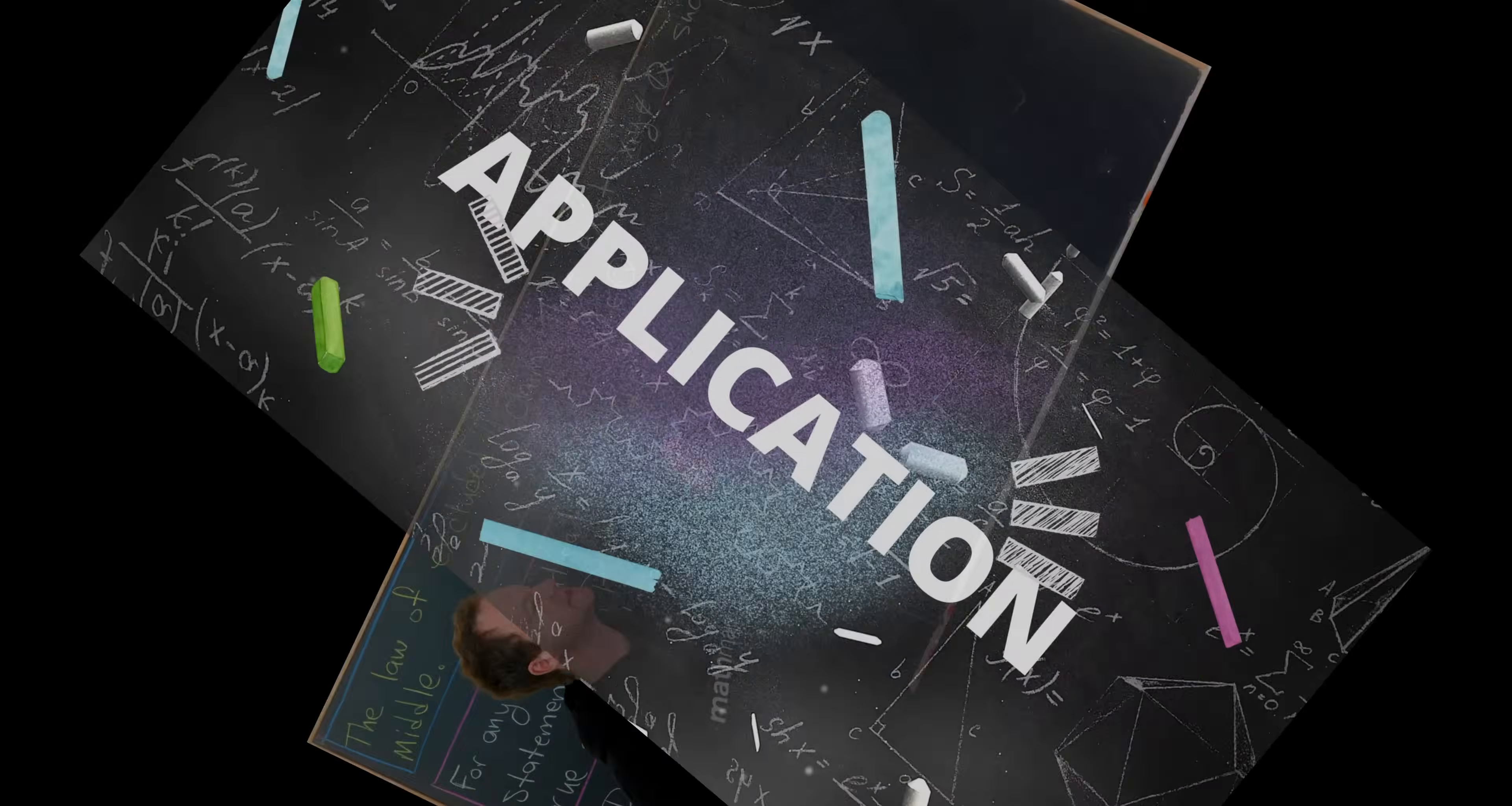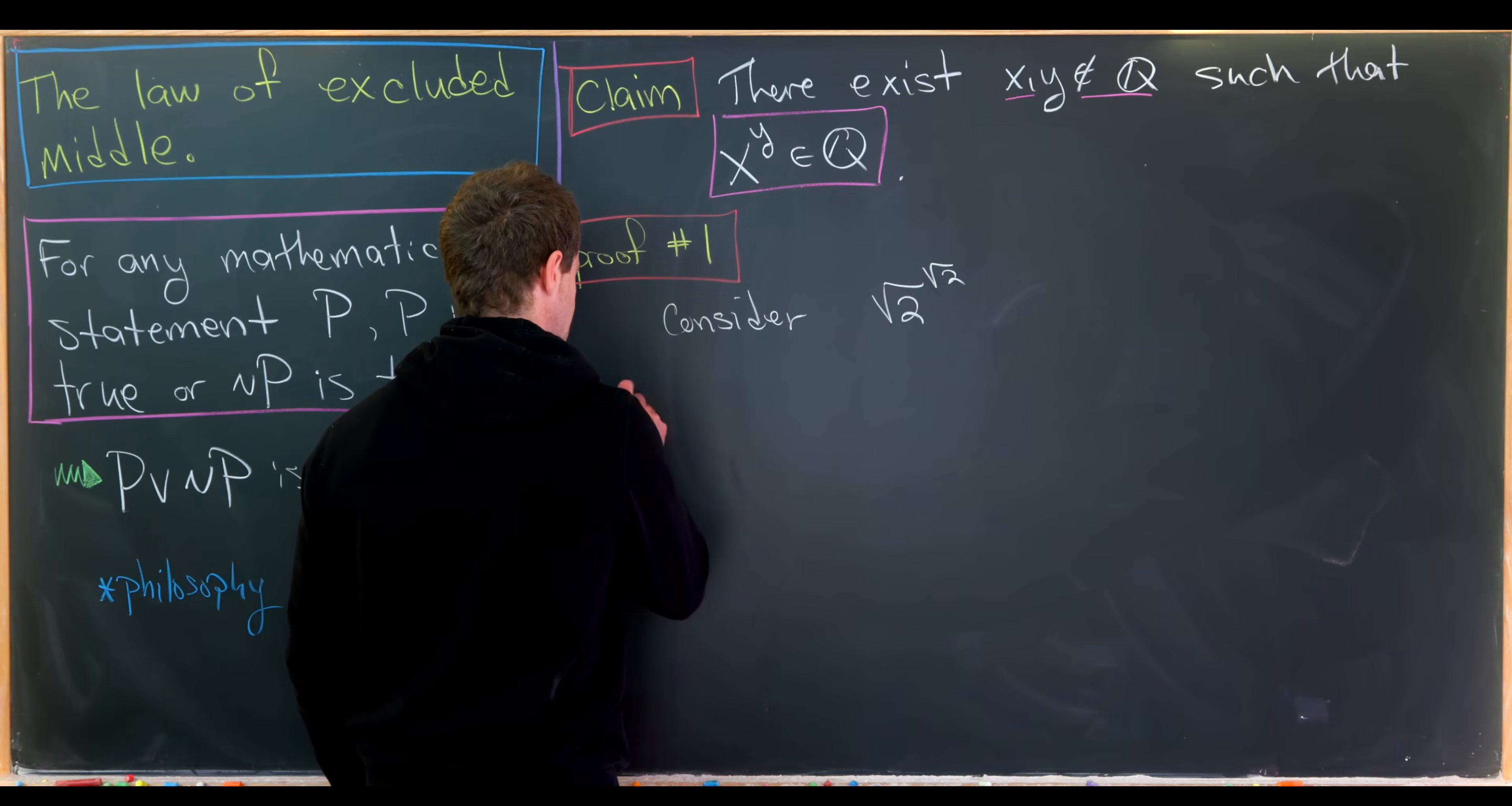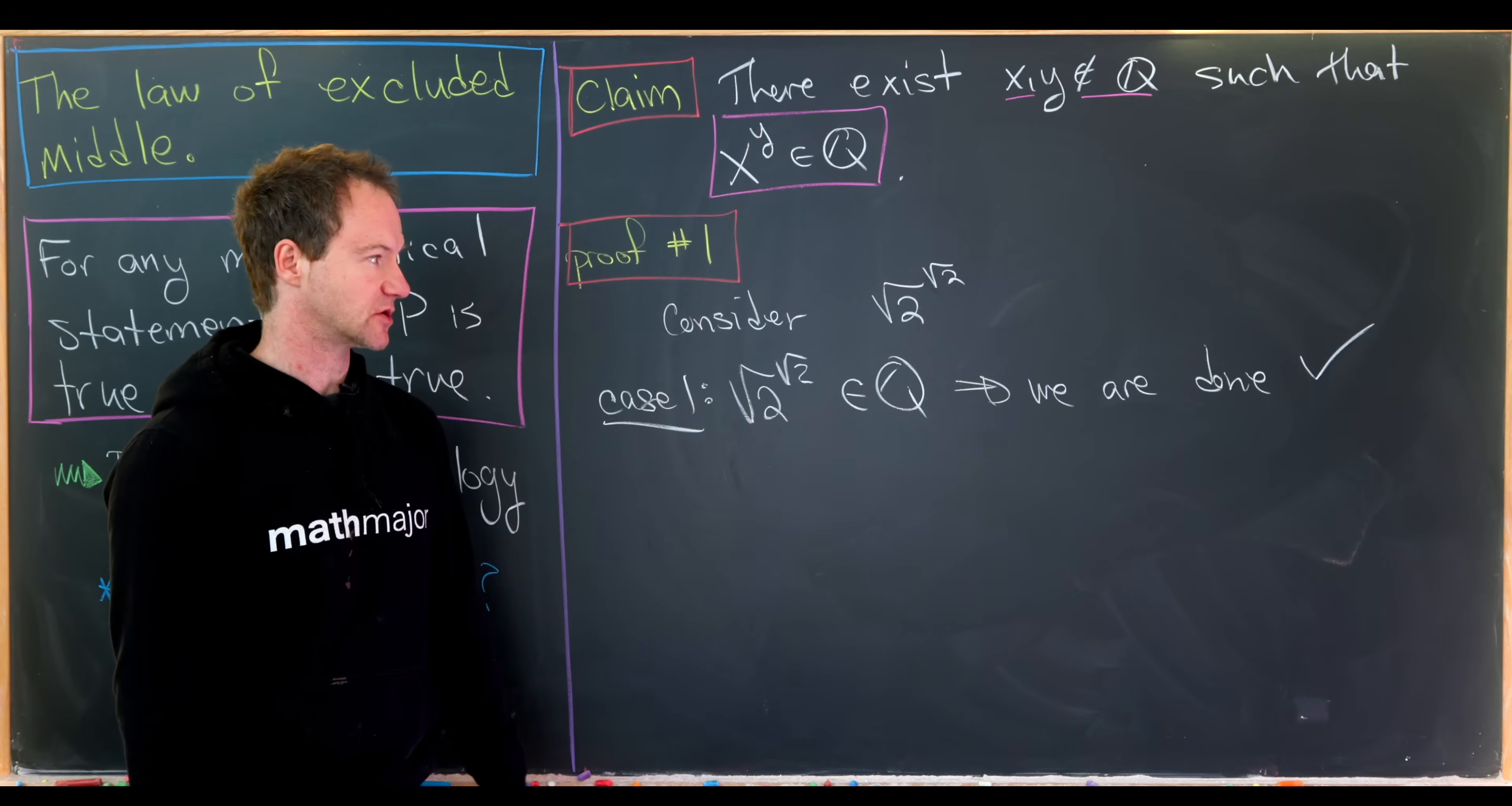So now that we've done all that work reviewing this law of excluded middle, let's look at an application. This is a really classic application. And it says there exists irrational numbers x and y such that x to the y is rational. Okay, so let's get going. So let's consider the number the square root of 2 to the power square root of 2. And let's look at two cases. So case number one, the square root of 2 to the square root of 2 is rational. And in this case, we're done. This implies we are done because we have an irrational number, the square root of 2 is irrational, to the power of an irrational number, which is rational.